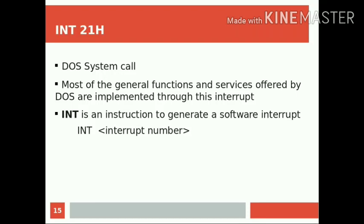How can I/O devices be accessed from an assembly language program? In the case of high-level languages like C, Java, etc., we have a number of full-fledged APIs for accessing I/O devices. For example, in C we can use printf, scanf, and other I/O functions for handling I/O interaction. But in the case of assembly language, we access I/O services through Software Interrupt.